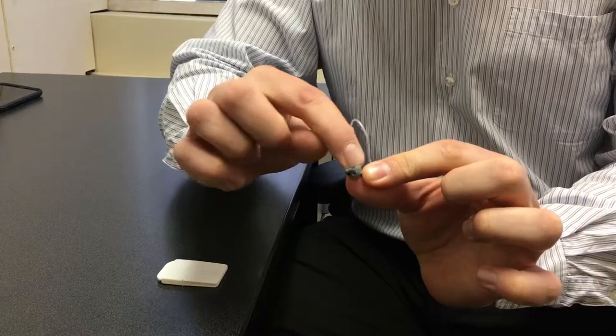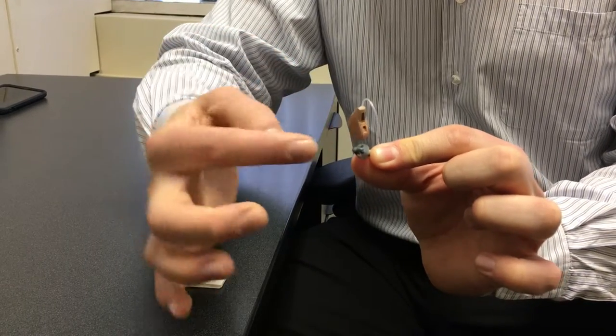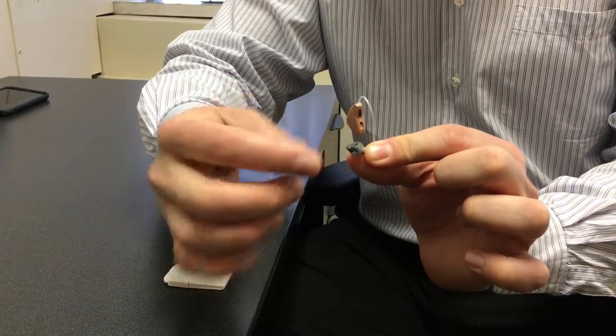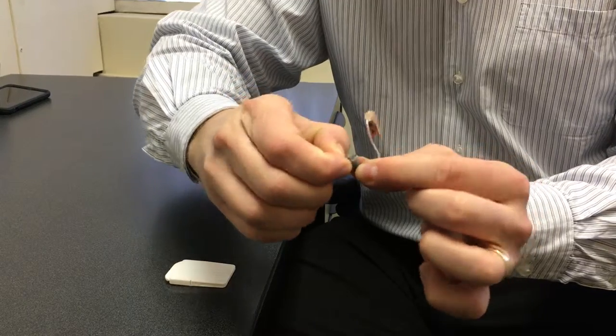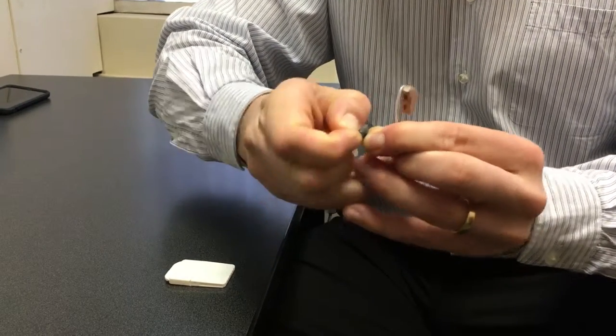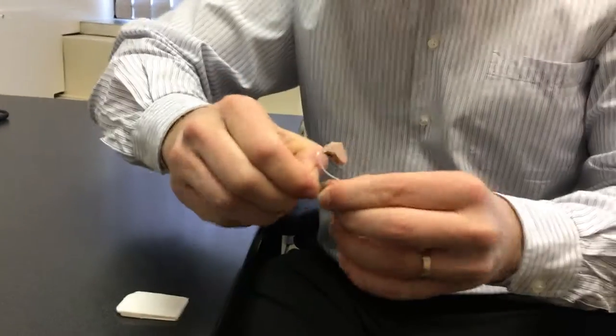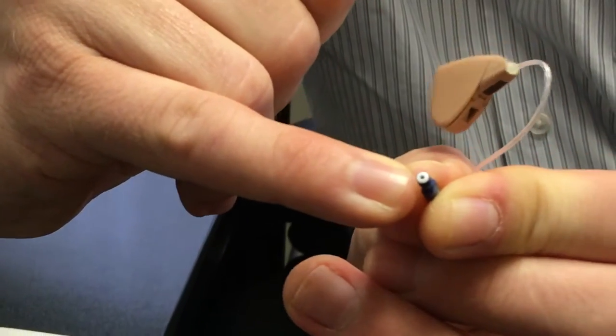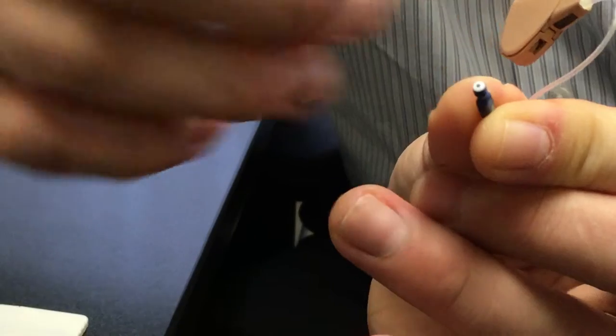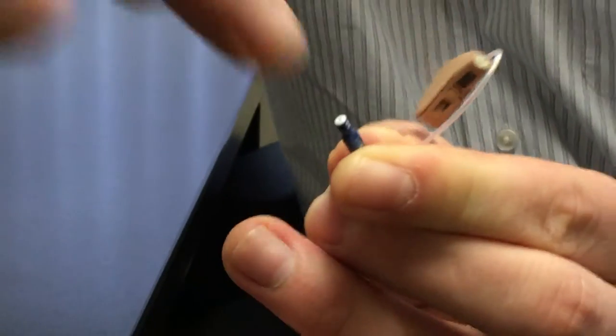So this is the part where the sound comes out and this rubber thing is a dome. Underneath that dome is a little filter, so if we pop that dome off, underneath is a little filter and it's just a little screen and it traps wax before it gets into the hearing aid.